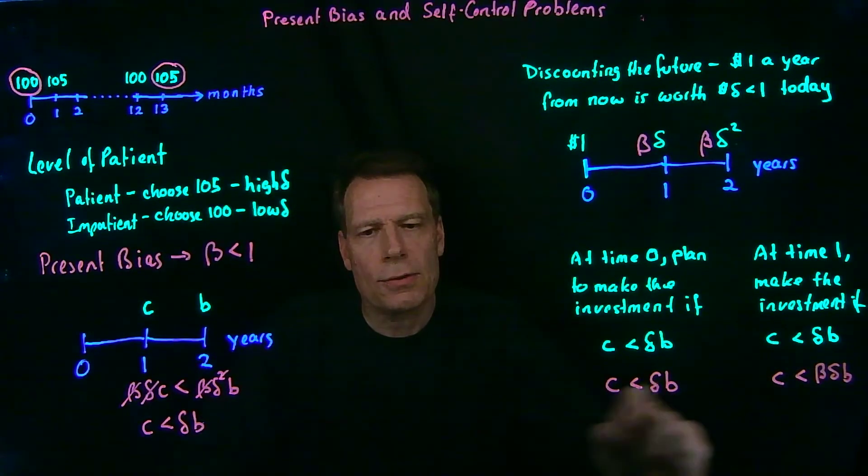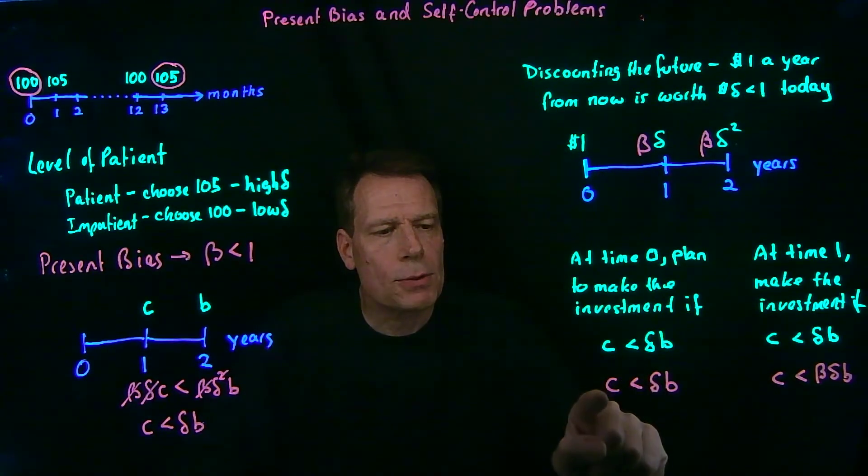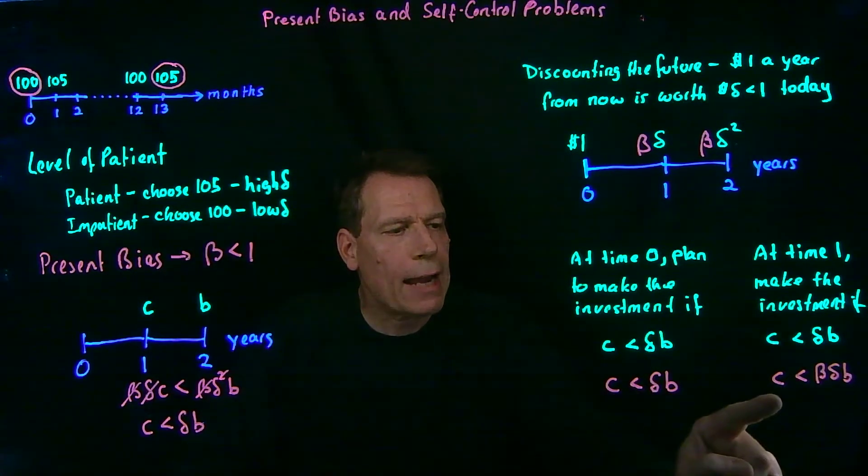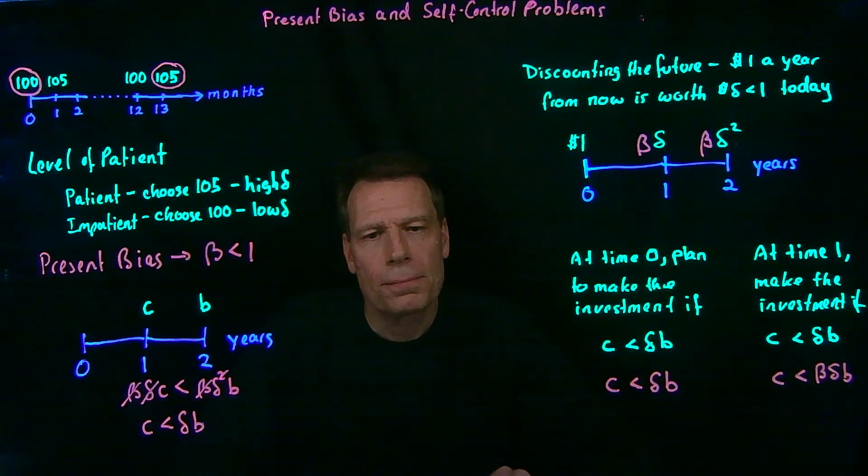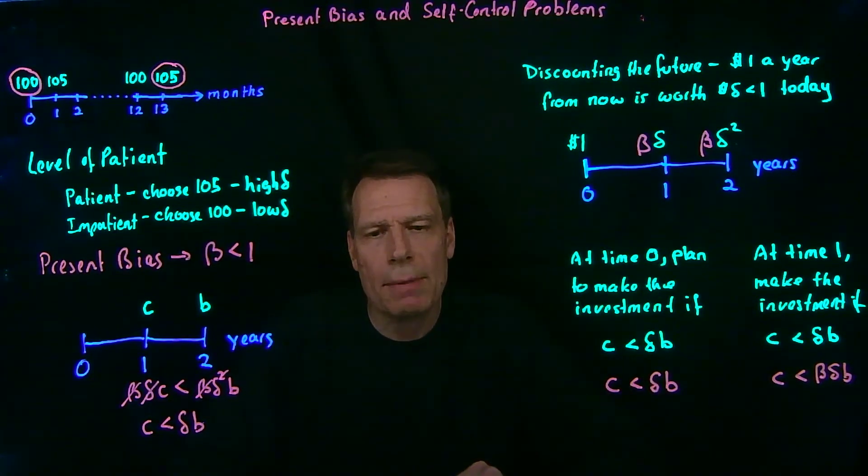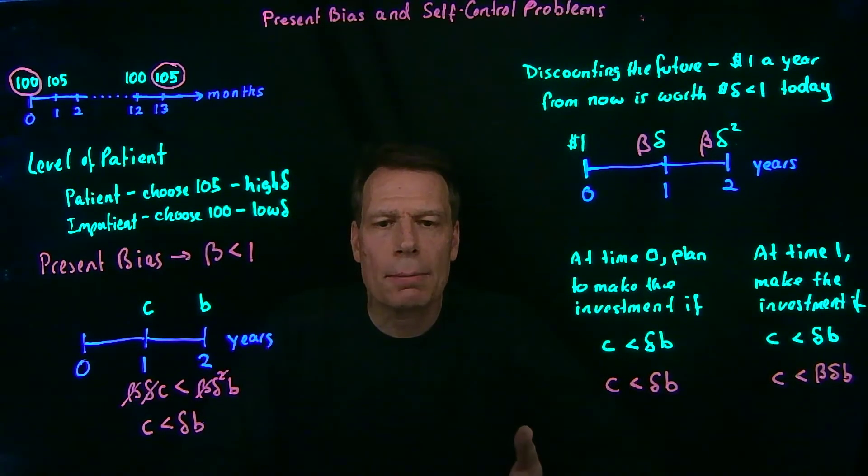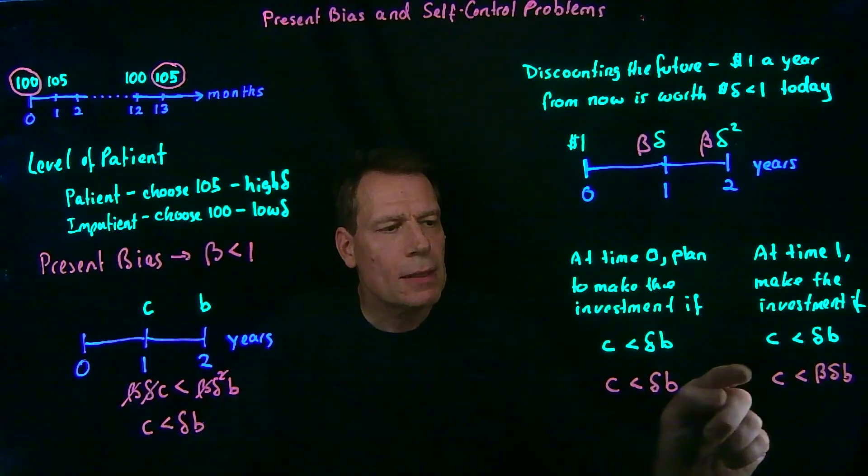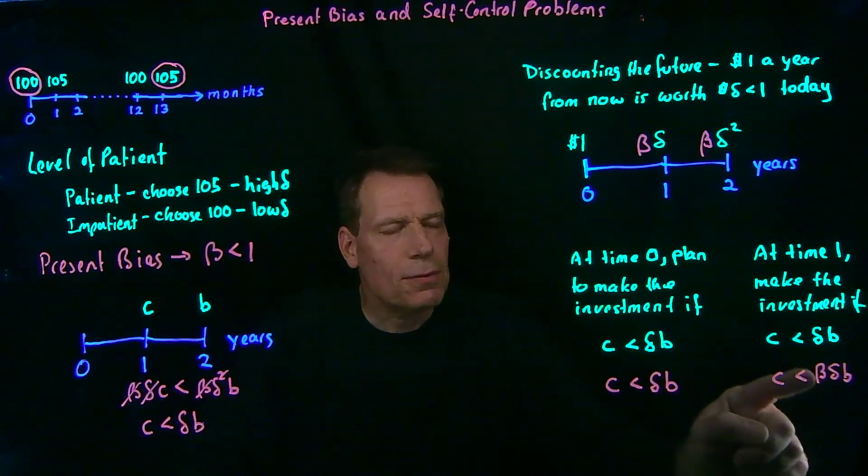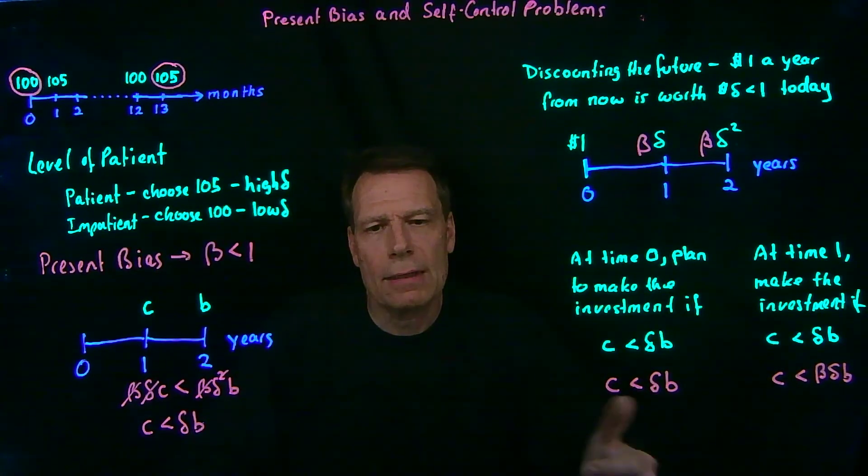Now the rule has changed. While we plan to make the investment so long as c is less than delta b, we're actually going to make the investment when the time comes as long as c is less than beta delta b. Now if beta is equal to one, the rule ends up being the same again. So the standard economic framework implicitly assumes that beta is equal to one, and we don't have present bias. But when beta is less than one, this term falls. Which means that there are certain costs at which we're willing to plan to make the investment, but then when the time comes, we've discounted that benefit further and we're no longer willing to make the investment.